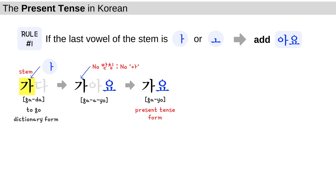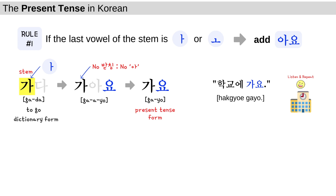Let's take a look at the sample sentence: 학교에 가요 — I go to school. 학교에 가요.